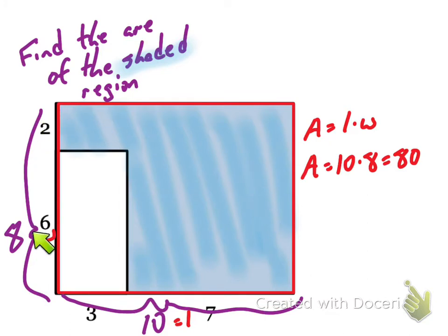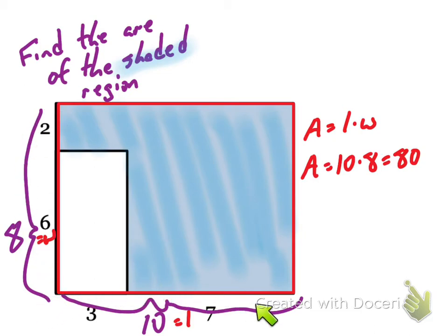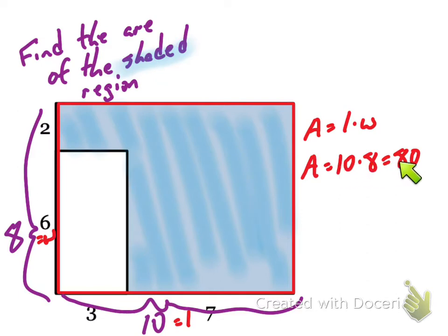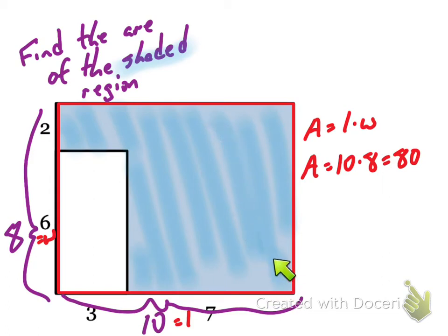I'm going to show you a couple of ways to solve this problem. Let's think about the dimensions of this entire red rectangle. The width would be two plus six — what's two plus six? That's eight. So that's the length of this whole side. And then the length of this other side is three plus seven, or ten. So length times width: ten times eight is eighty. The area of this entire red rectangle is eighty square units.